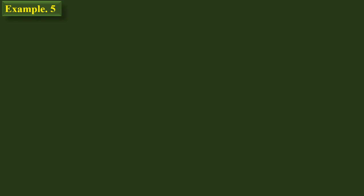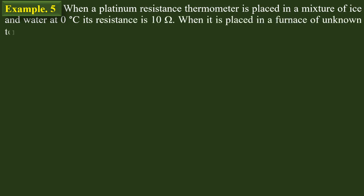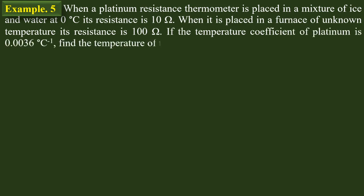When a platinum resistance thermometer is placed in a mixture of ice and water at 0 degrees Celsius, its resistance is 10 ohms. When it is placed in a furnace at an unknown temperature, its resistance is 100 ohms.